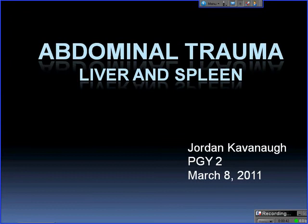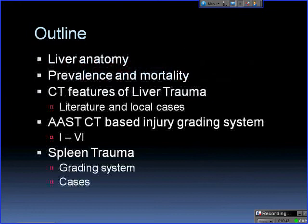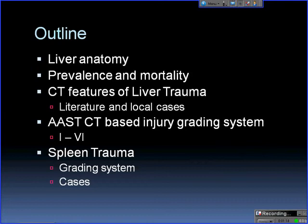So, abdominal trauma — liver and spleen. The outline today is to start with a bit of liver anatomy, just a quick review. We'll talk about prevalence and mortality of liver trauma, look at the CT features, the major categories, and look at some literature cases and some local cases. Then we'll go over the grading system through the AAST, and then briefly cover splenic trauma and look at the AAST criteria for spleen trauma with a couple of local cases.